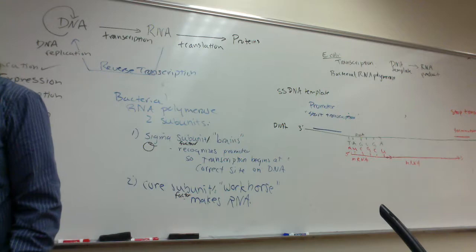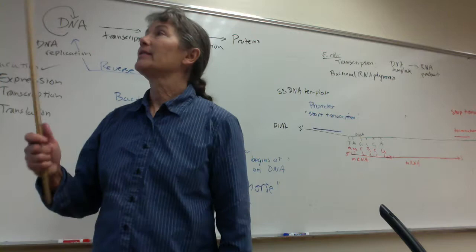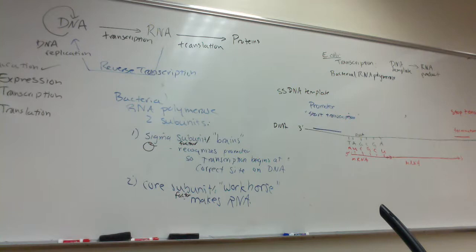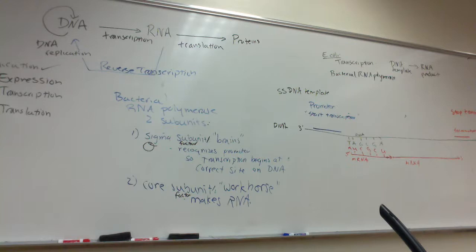This is the fancier, more accurate view of transcription. Here's our RNA polymerase — the core subunit and sigma subunit — scanning the double-stranded chromosomal DNA. When it hits a promoter, transcription begins. RNA polymerase acts as its own helicase, locally breaking the hydrogen bonds so instead of double-stranded DNA we have single-strand DNA. Only one strand is used as the template. So the RNA polymerase opens up the DNA locally, uses the template strand, and synthesizes RNA.